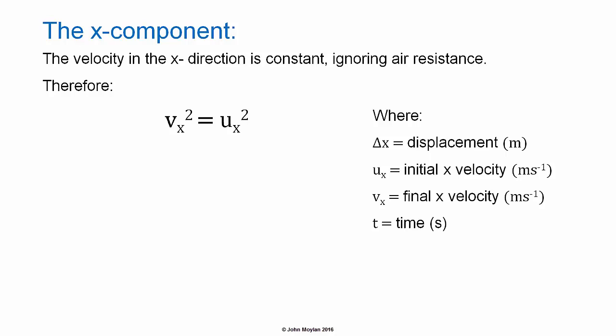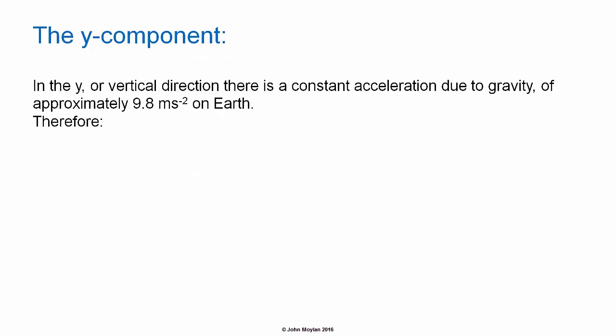Therefore, V subscript X equals U subscript X, where V subscript X is the final velocity in meters per second and U subscript X is the initial velocity in meters per second. Therefore we can say that V subscript X equals U subscript X. Delta X, the X displacement, is equal to U subscript X multiplied by T, time.